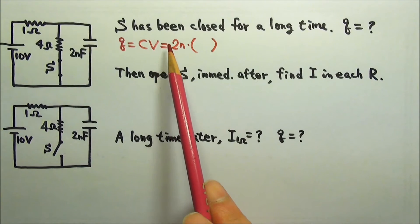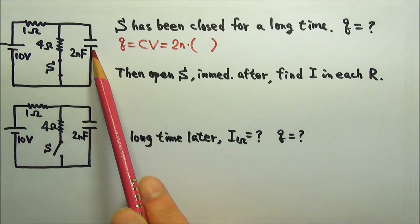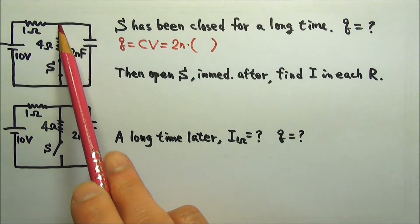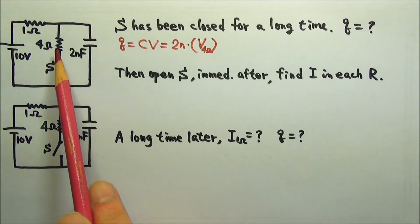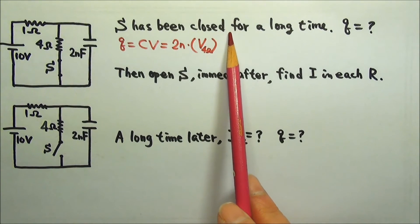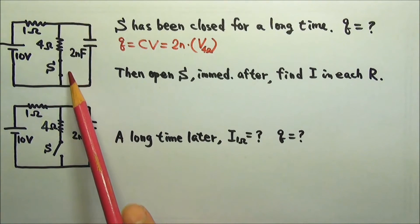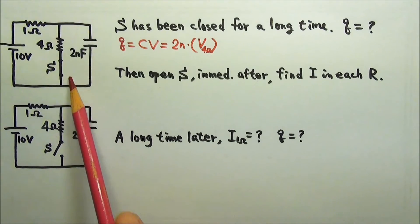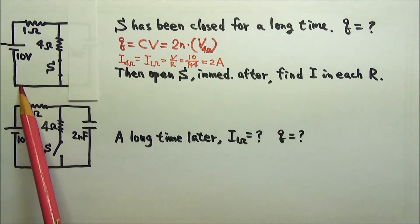Q equals CV, so we need the voltage across the capacitor. Because the capacitor is in parallel with the 4 ohms, it gets the same voltage as the 4 ohm resistor. To find the voltage across the resistor, we need the current through it. A long time after the switch has been closed, the capacitor is fully charged, so there is no more current in this segment. That means if we cut the wires here and there, the rest of the circuit should not be affected, so we can just look at this part of the circuit.